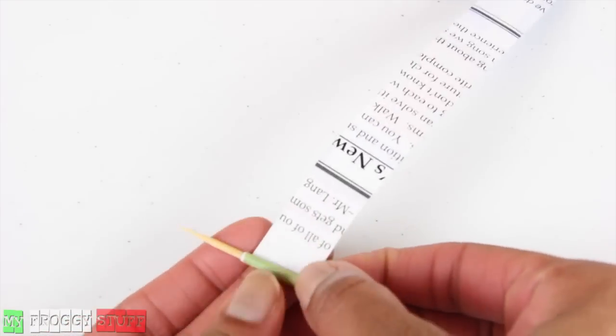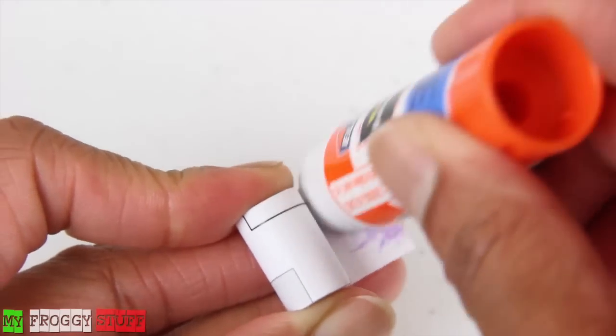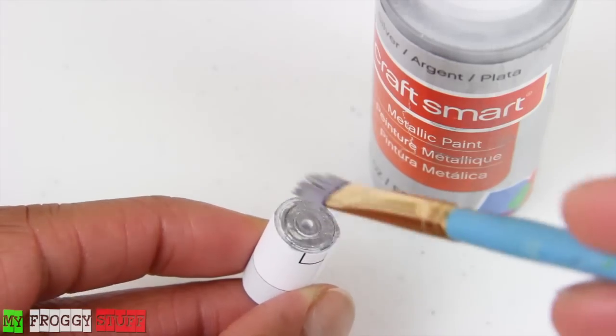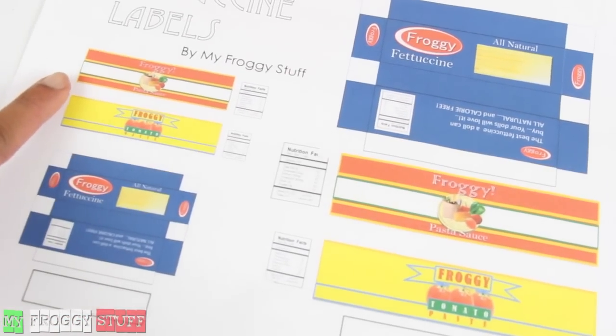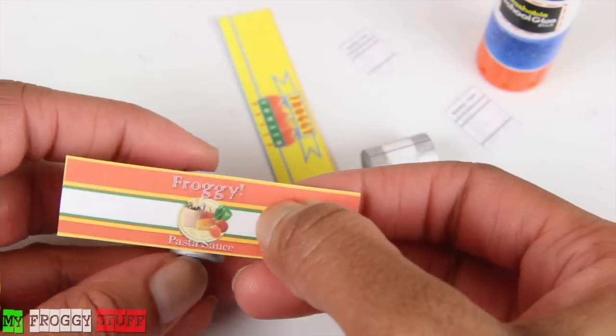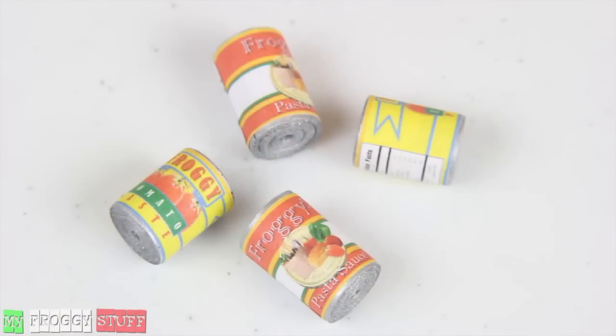Roll recycled paper around a toothpick, use glue to secure the ends, and paint the top and bottom silver. Or, we used printable can labels from our blog, cut them out and glued them on to make cans of pasta sauce and tomato paste.